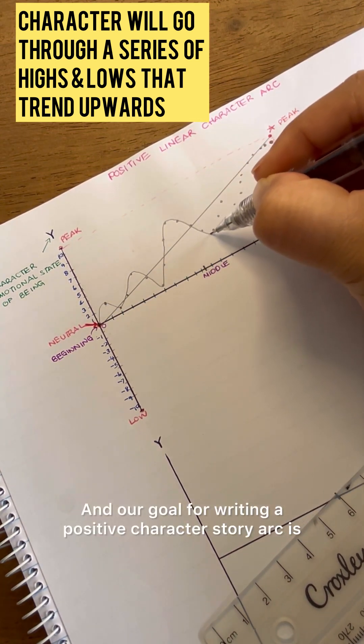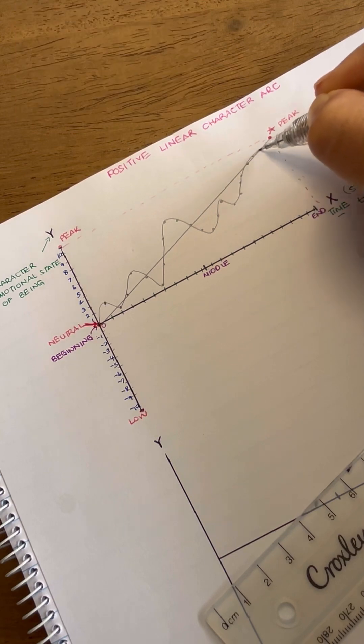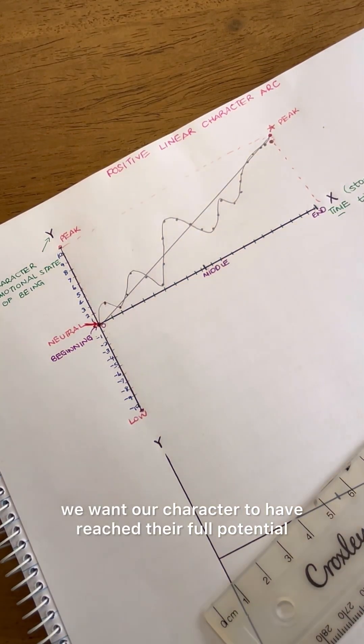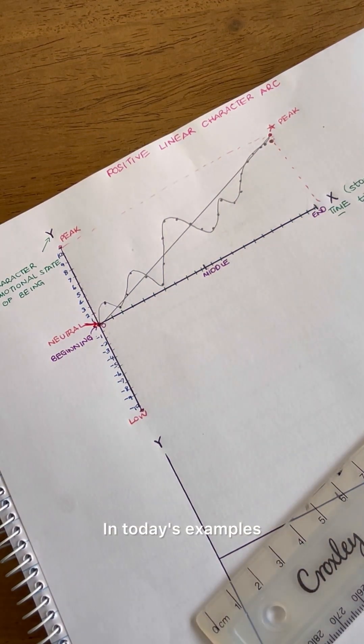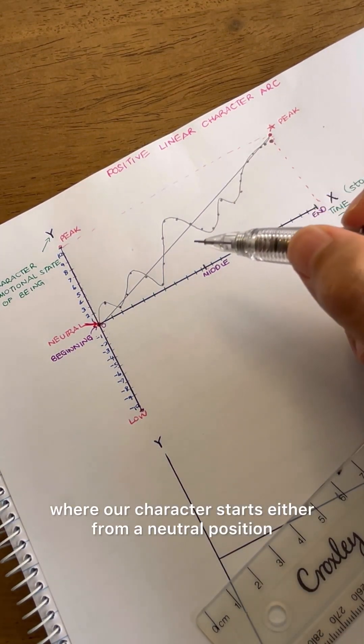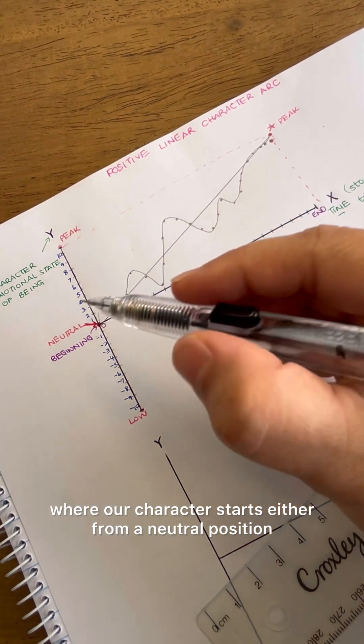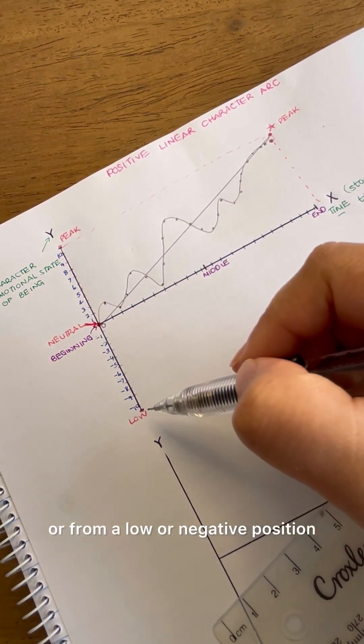And our goal for writing a positive character story arc is that by the end, we want our character to have reached their full potential. In today's examples, we're going to examine two scenarios where our character starts either from a neutral position or from a low or negative position.